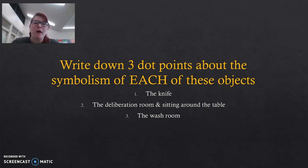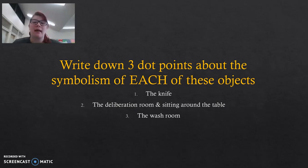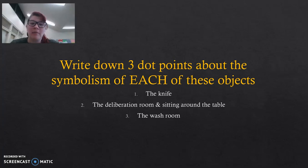A reminder to you that everything in yellow needs to be answered in your book. So as well as the notes that you'll take down for each slide, if there's something in yellow, that's a question, and that needs to be written down as well. Last time, you had to write down three dot points about the knife, the deliberation room, and the washroom. So in this video, we're going to go through each of those in more detail.